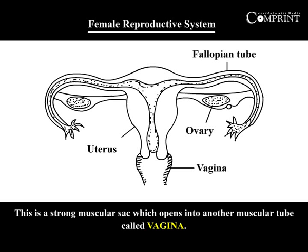The uterus is a strong muscular sac which opens into another muscular tube called the vagina.